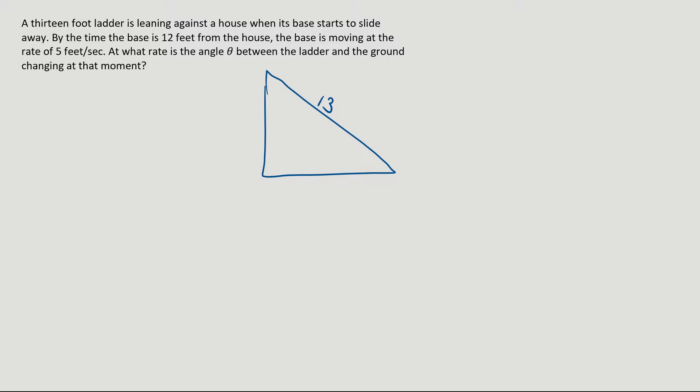When its base starts to slide away, so the base is moving that way. By the time the base is 12 feet from the house, the base is moving at a rate of 5 feet per second. At what rate is the angle theta between the ladder and the ground changing at that moment? So between the ladder and the ground, that means our theta is right there.